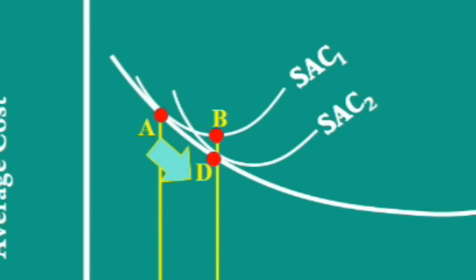It takes the path A to D. It slides down along the long run average cost curve.